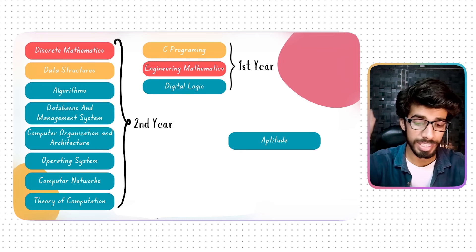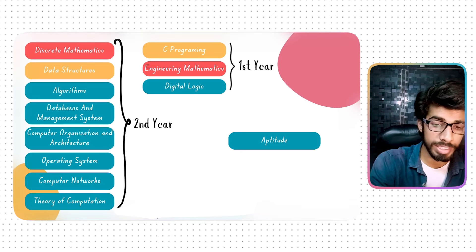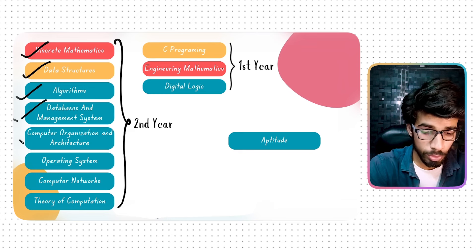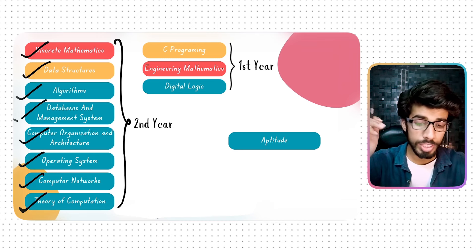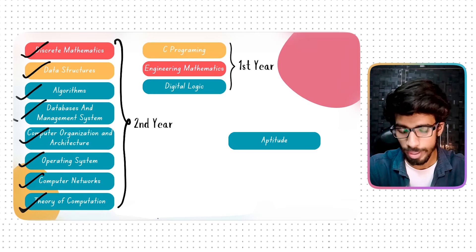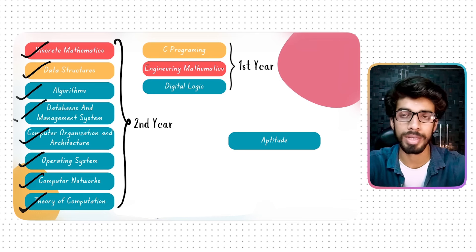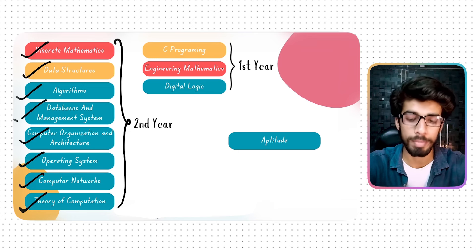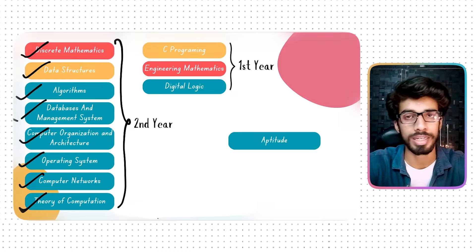The majority of the subjects you can study in GATE CSE such as Discrete Mathematics, Data Structures, Algorithm, DBMS, COA, Operating System, Computer Networks, and TOC — which is called Automata in engineering. For aptitude, we have topics like Time and Distance, Downstream and Upstream, and Work and Time questions. So the majority of subjects that are in GATE CSE you have to study in first and second year.